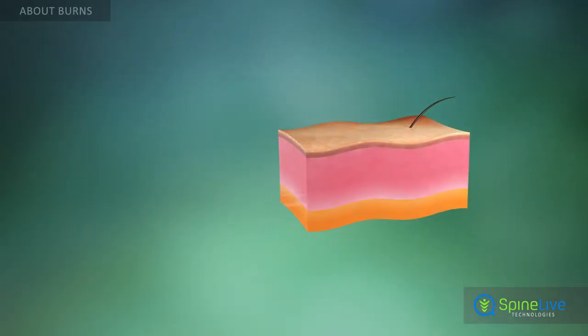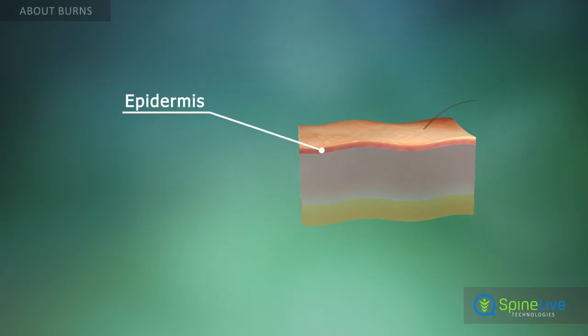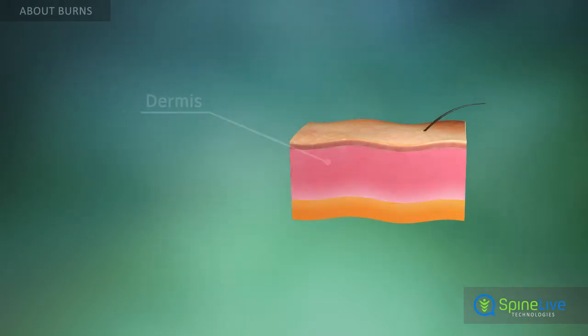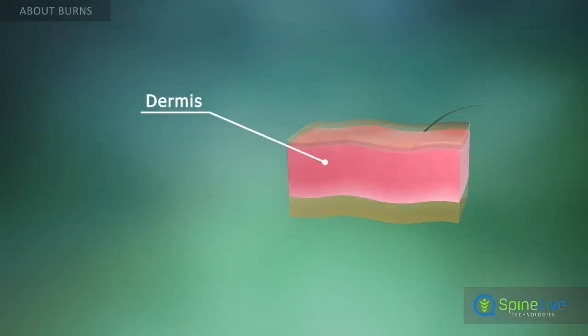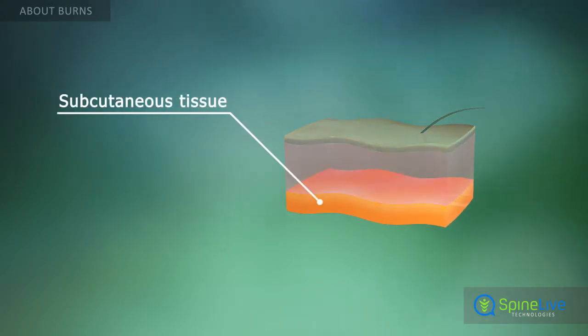Human skin consists of three layers: the epidermis, dermis, and the subcutaneous tissue.